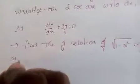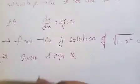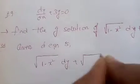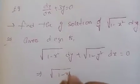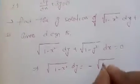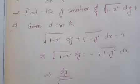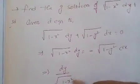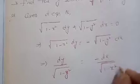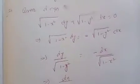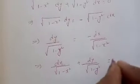This implies √(1 - x²) dy + √(1 - y²) dx = 0. Rearranging, dy / √(1 - y²) = − dx / √(1 - x²), which implies dx / √(1 - x²) + dy / √(1 - y²) = 0.